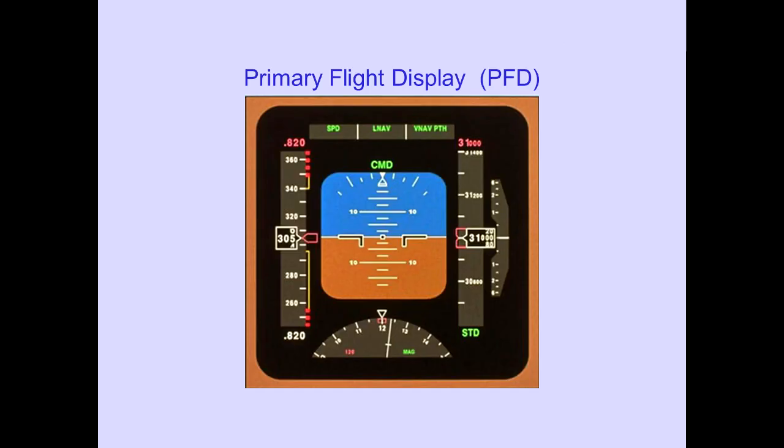The 747-400 uses cathode ray tubes or CRTs to display flight and navigation information. Flight information is shown on the primary flight display, commonly referred to as the PFD.